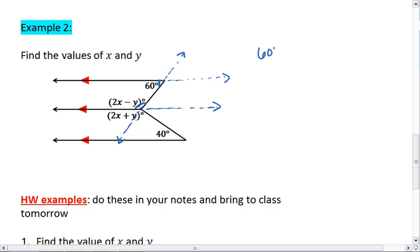So 60 degrees plus 2x minus y equals 180 degrees, giving us 2x minus y equals 120. This is the first equation that we come up with.